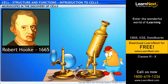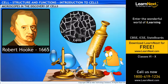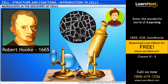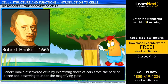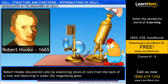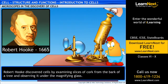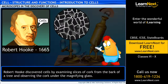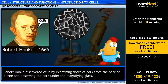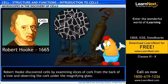With the help of a microscope, an English scientist, Robert Hooke, first discovered the existence of cells in 1665. So before that, no one had been able to examine a cell? Right! Even Robert Hooke wasn't really able to see samples of living cells. He discovered cells by examining slices of cork from the bark of a tree and observing it under the magnifying lens. He was able to see partitioned boxes. He named these boxes cells, since it resembled the cells in which monks lived.